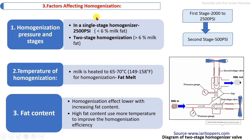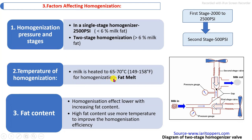What are the factors that affect the efficiency of homogenization? First is the specific pressure and stage of homogenization. Homogenization may be carried out in a single stage or two stages depending on the initial fat content. Pressure in the first stage ranges from 2000 to 3000 psi maximum, and the second stage uses 500 psi. Second is temperature — milk is preheated to a minimum of 60 to 70 degrees Celsius to melt the fat before homogenization. Third is the fat percentage in the milk — if fat content is high, efficiency of homogenization is lowered.